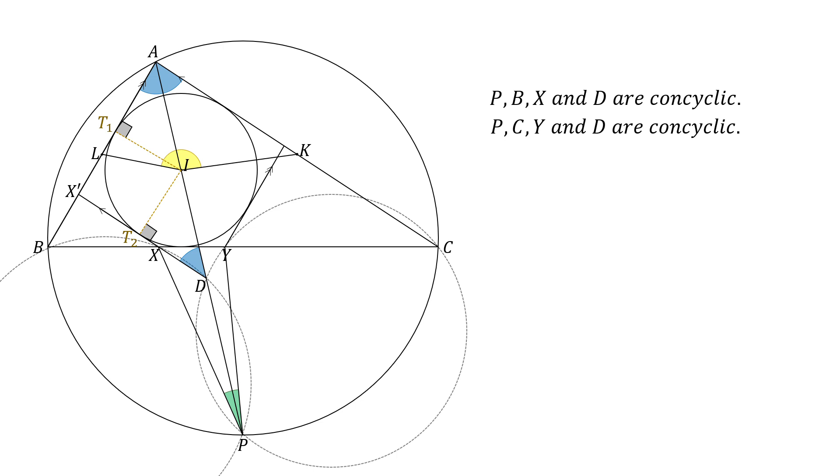Now, in right-angle triangles AIT1 and DIT2, two angles and a pair of sides are equal, so they are congruent. From this, we can conclude that the corresponding sides AI and ID are equal. I is the midpoint of AD.